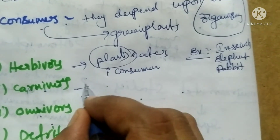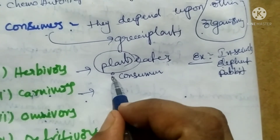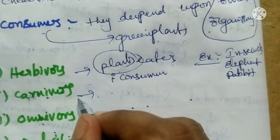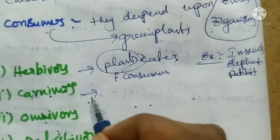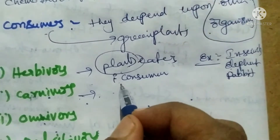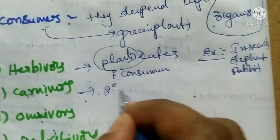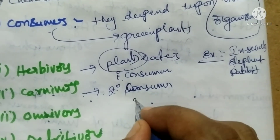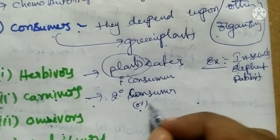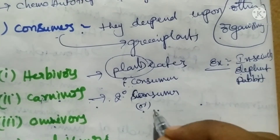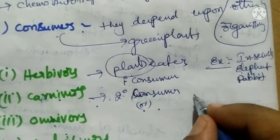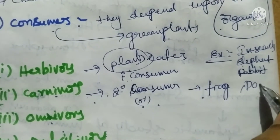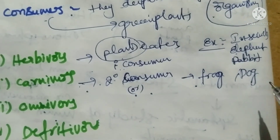Carnivores means which eat the herbivores — which eat the plant eaters. Carnivores depend on the primary consumers for their food, so they are called the secondary consumers. They are non-vegetarian. For example, frog is a carnivore, dog is also non-vegetarian.